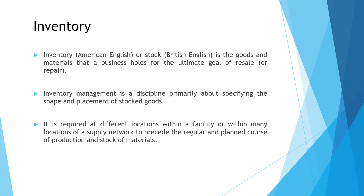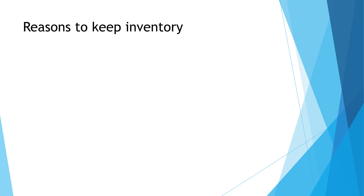Inventory may be required at different locations within a facility or at different places in your manufacturing centers. The first reason we keep inventory is time. When you order something from a supplier, it passes through a number of traders and middlemen, each taking their own time. Industries run at a fast pace and want products available immediately, so we buy material in bulk and keep it so that production is not hampered.